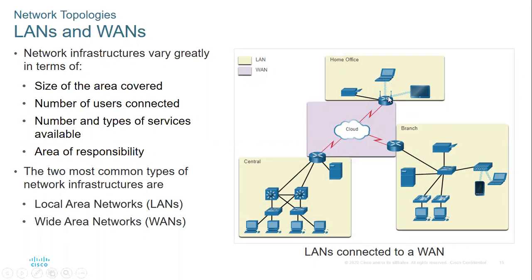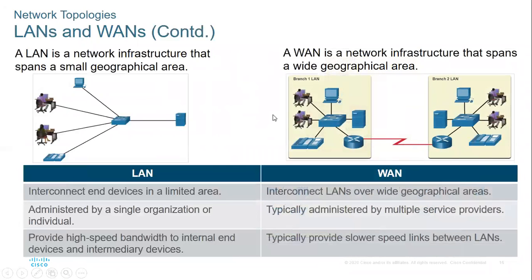To join two local area networks, you use routers. The network between the routers is called a wide area network — a WAN — which connects two different local area networks.